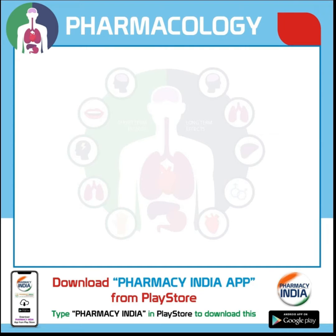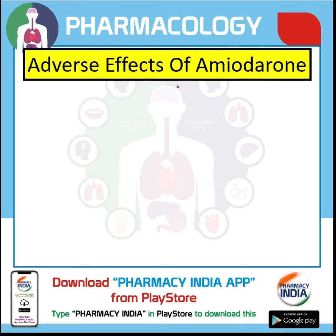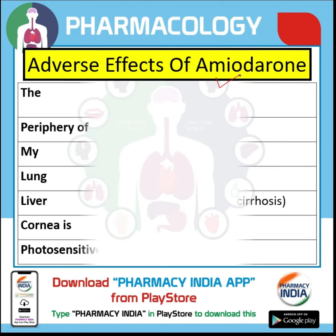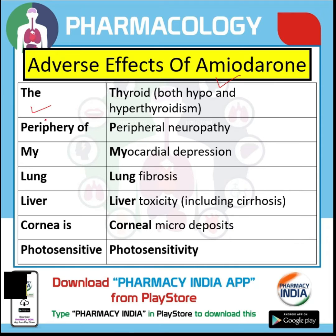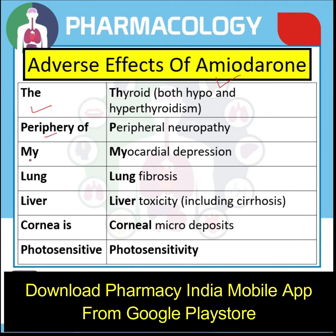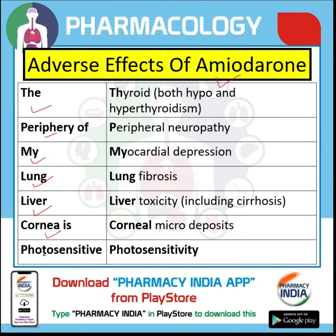Hello students, welcome. In today's video we are going to learn about the adverse effects of amiodarone with the help of a trick. The trick is: 'the periphery of my lung and liver cornea is photosensitive.'